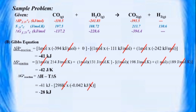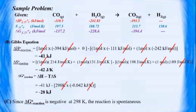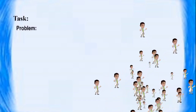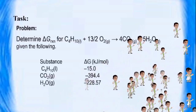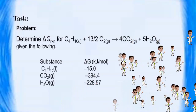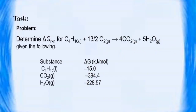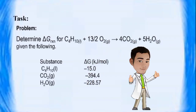For part C, since the change in free energy of the reaction is negative at 298 K, the reaction is spontaneous. Now it's your turn to solve the following problem. I hope you have learned a lot from this video lesson. Goodbye.